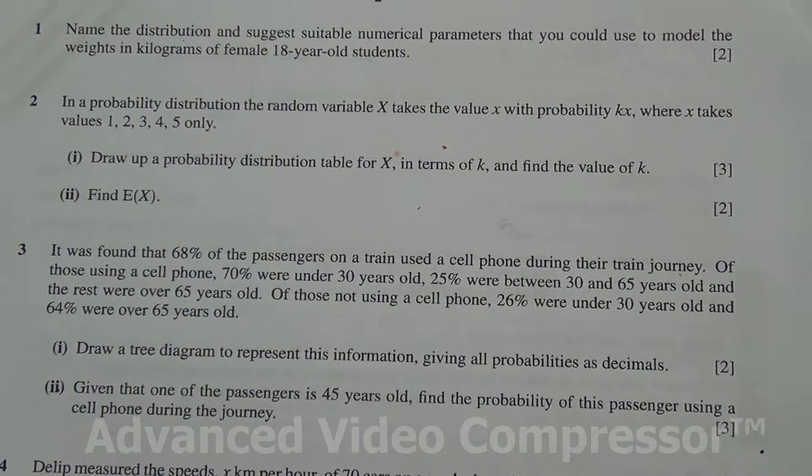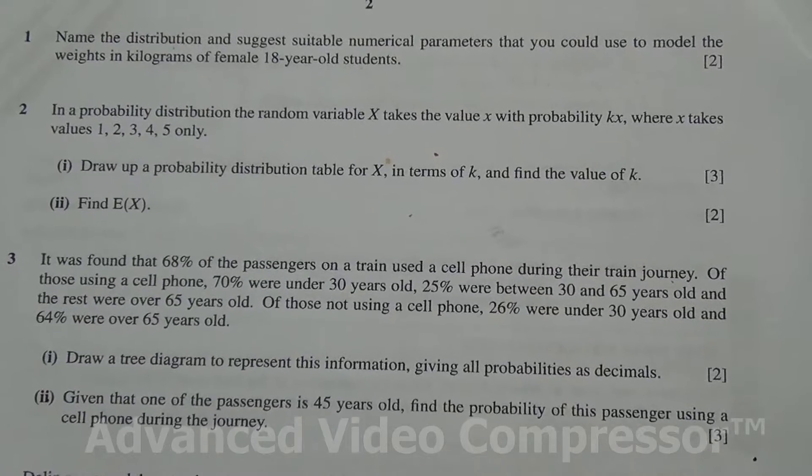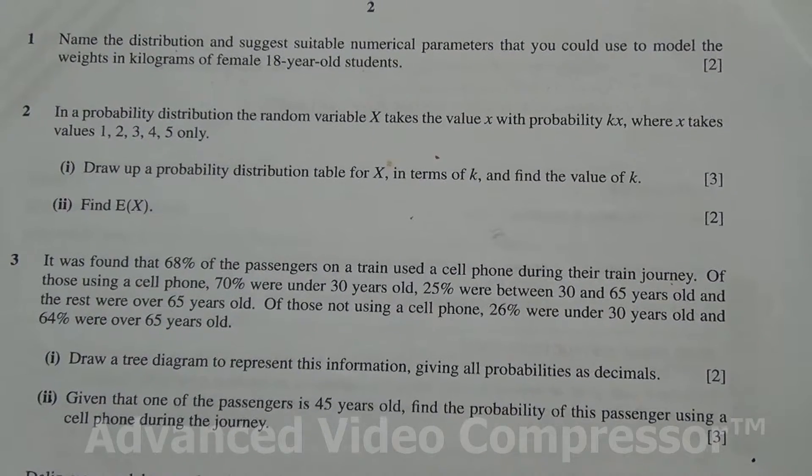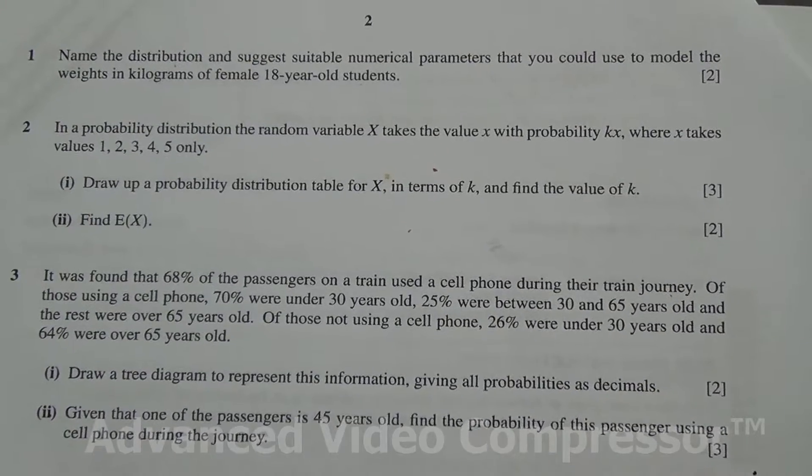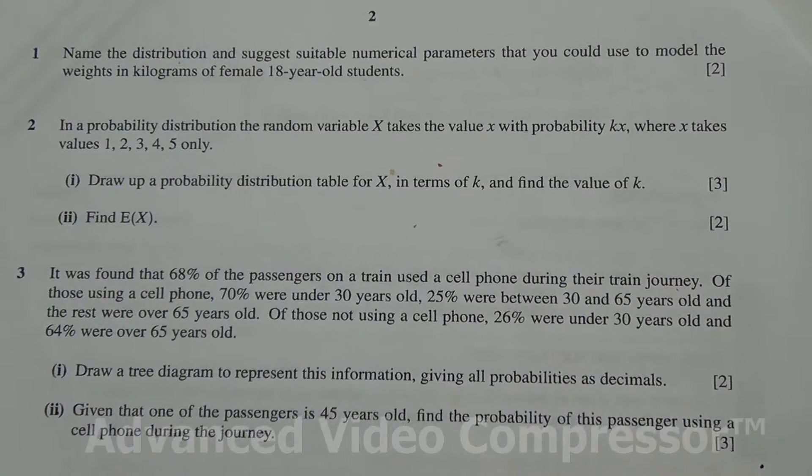In a probability distribution, the random variable X takes the value x with probability kx, where x takes the values 1, 2, 3, 4, 5 only.